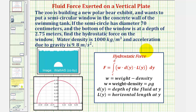The zoo is building a new polar bear exhibit and wants to put a semicircle window in the concrete wall of the swimming tank, as we see pictured here. If the semicircle has diameter 70 centimeters, and the bottom of the window is at a depth of 2.75 meters, we want to find the hydrostatic force on the window.